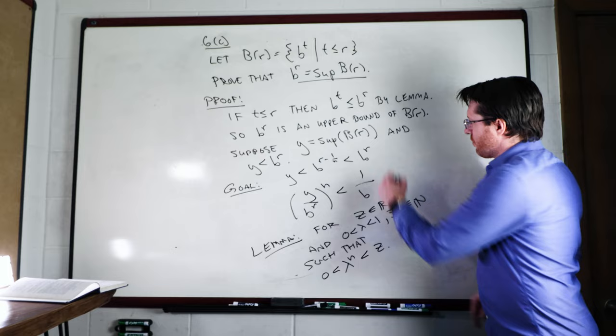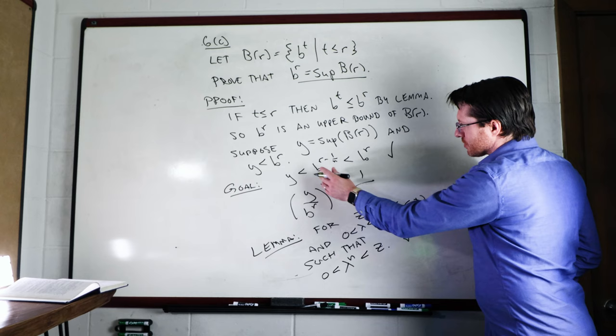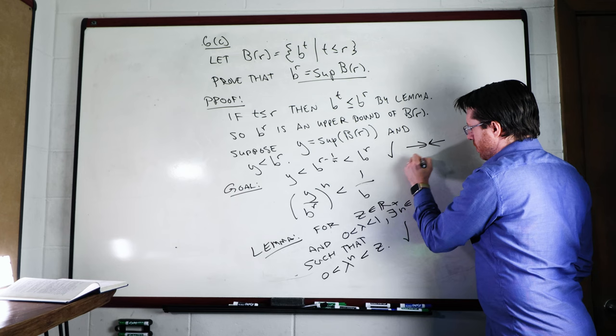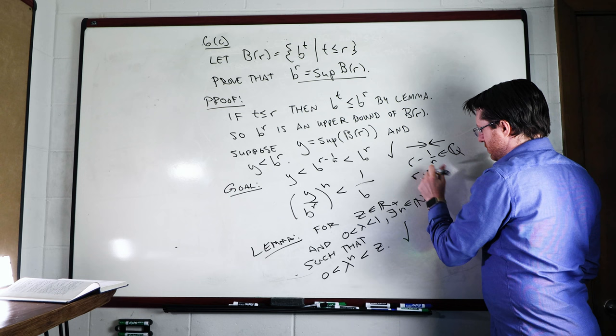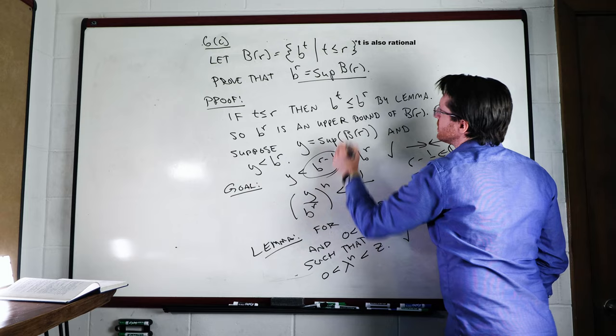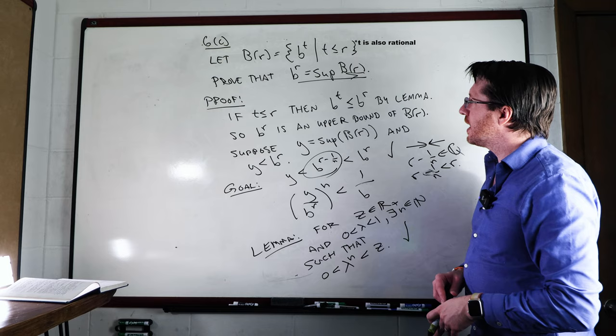And so then we verified this, barring that you go through and do that proof. And so then once you've found that n where this works, this is a contradiction because r minus 1 over n is in Q, and r minus 1 over n is less than r, which means it is inside, this quantity is inside of our BR, and y is supposed to be bigger than all of them. And so that's a contradiction. And there you go. That is the proof.